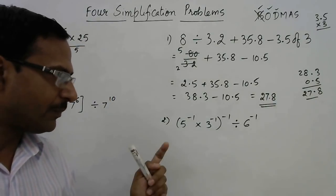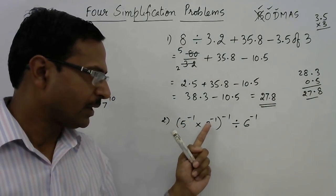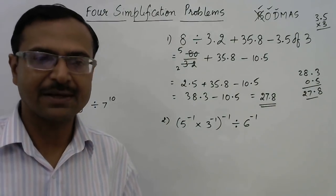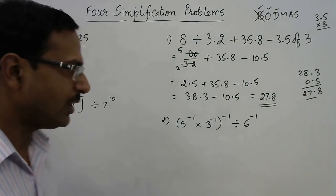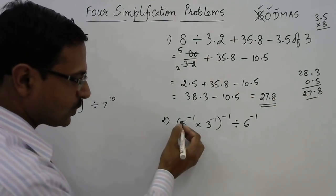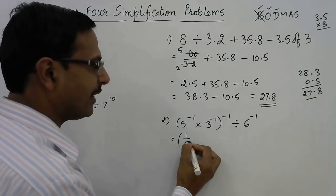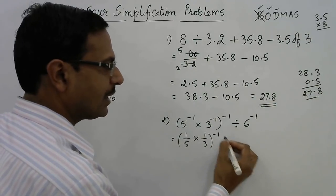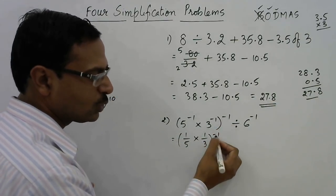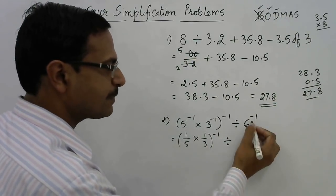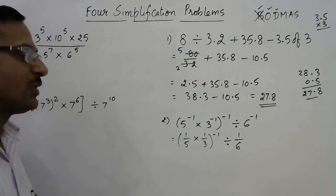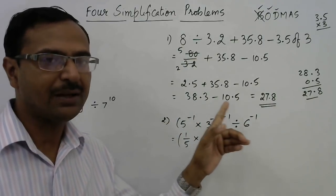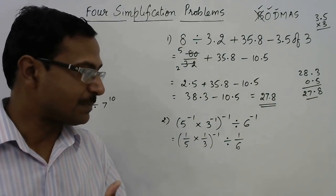How do we solve this? Every term here involves power minus 1. What does power minus 1 mean? It simply means the reciprocal of the base. So 5 raised to power minus 1 is 1 upon 5, and 3 raised to power minus 1 is 1 upon 3. I will simplify the bracket first and then use power minus 1. In the first step we have removed three instances of power minus 1.